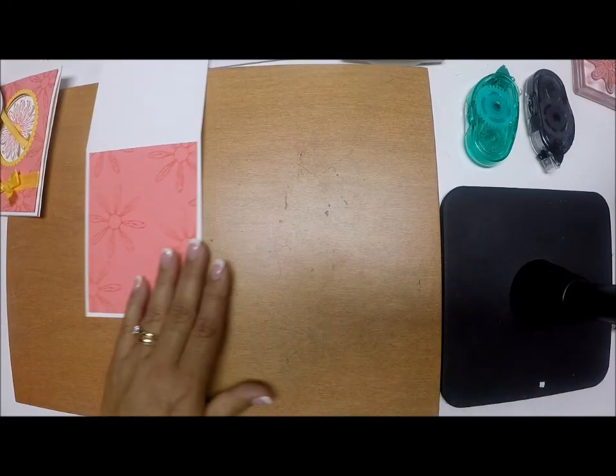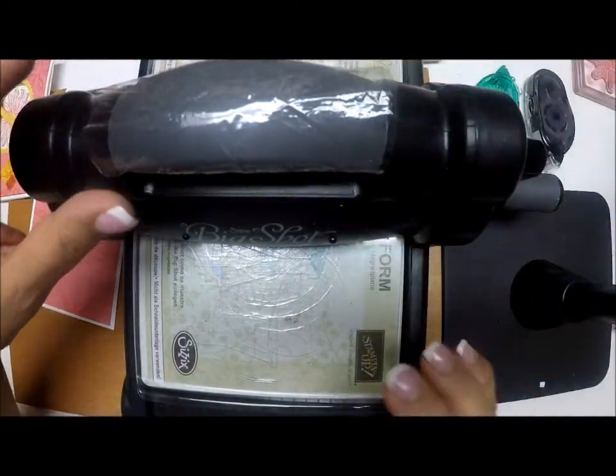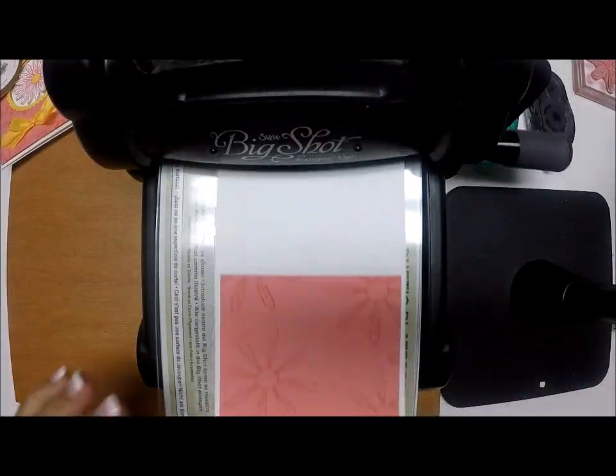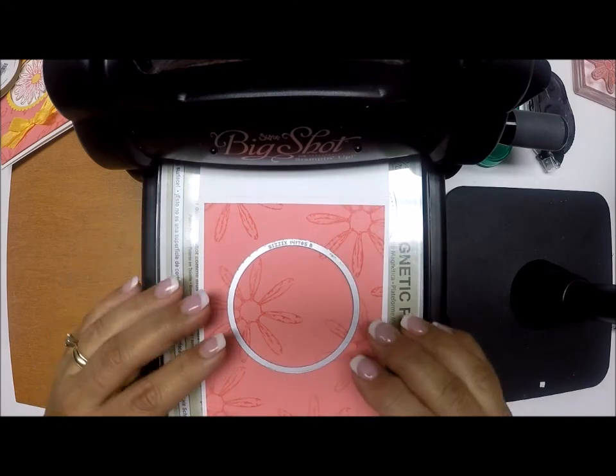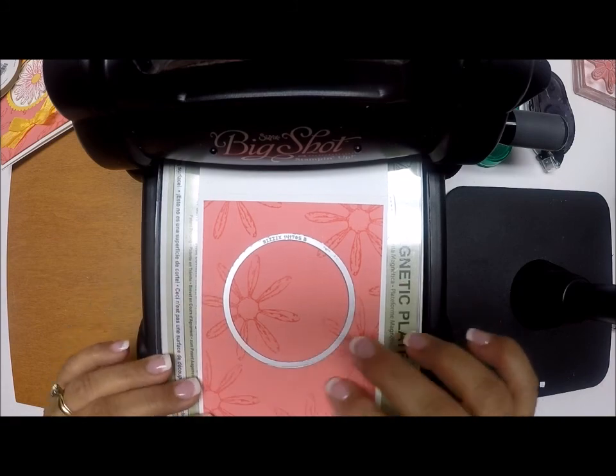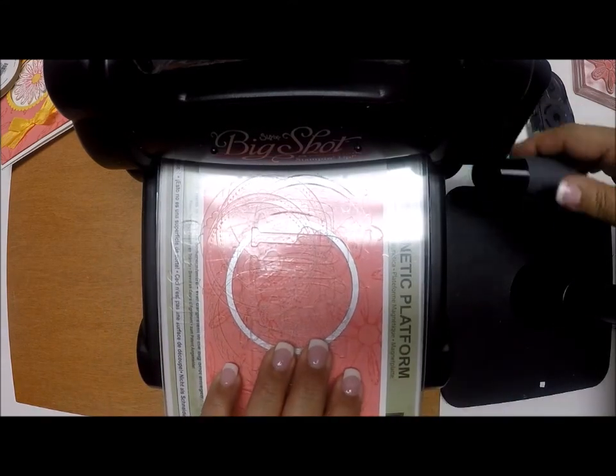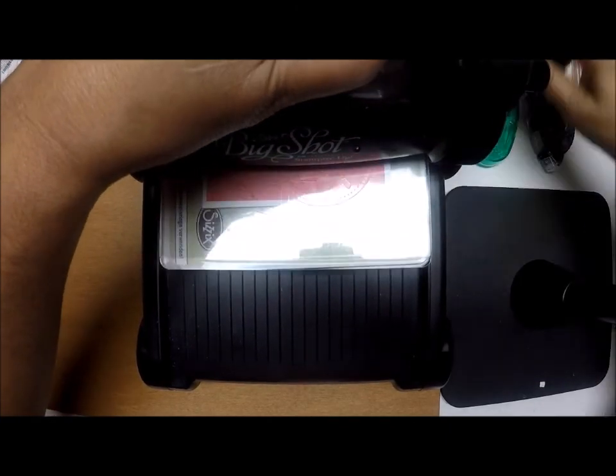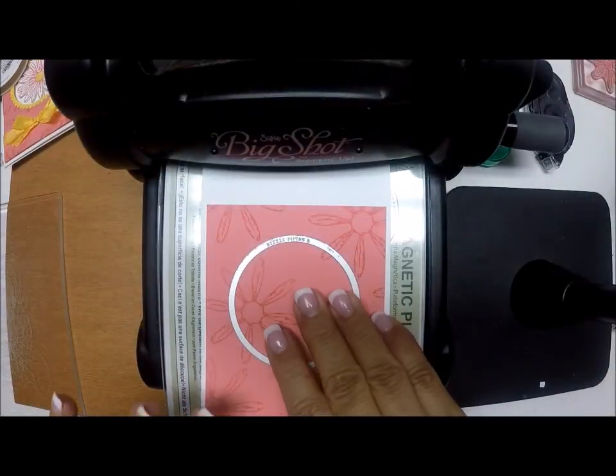Now I'm going to bring up my Big Shot. I'm going to put this flat there. And I'm going to take my framelit, just the circle one. And I'm going to figure out where I want it. I think I'm going to put it right here because I'm going to leave a little bit of space so that I can tie my ribbon. Once I have it where I want it, I'm going to run that through. We are going through two pieces of cardstock, so we want to make sure that it cuts all the way through.